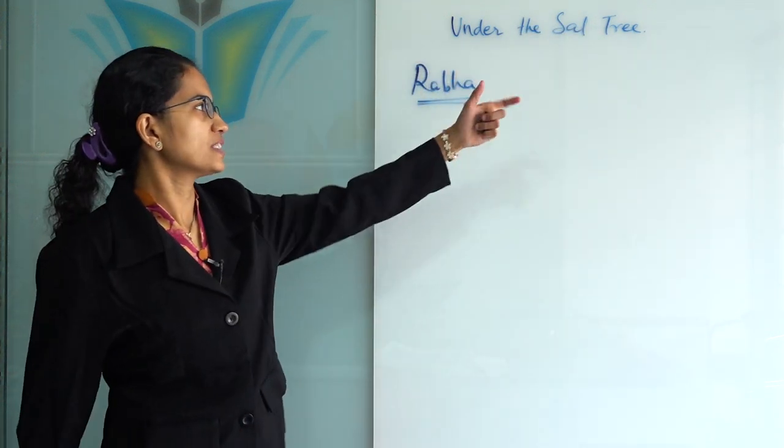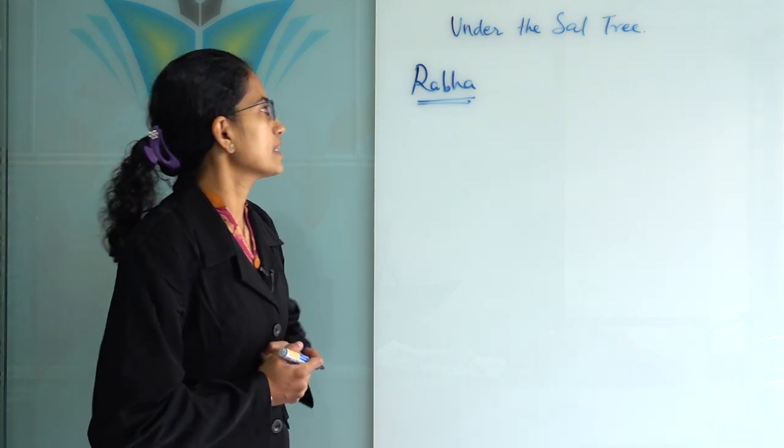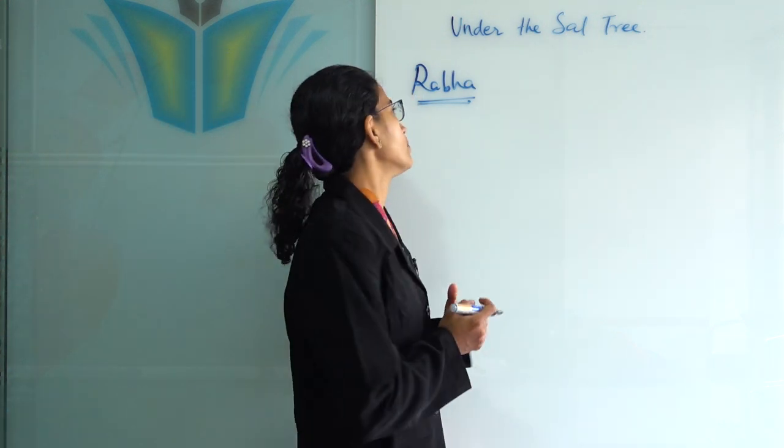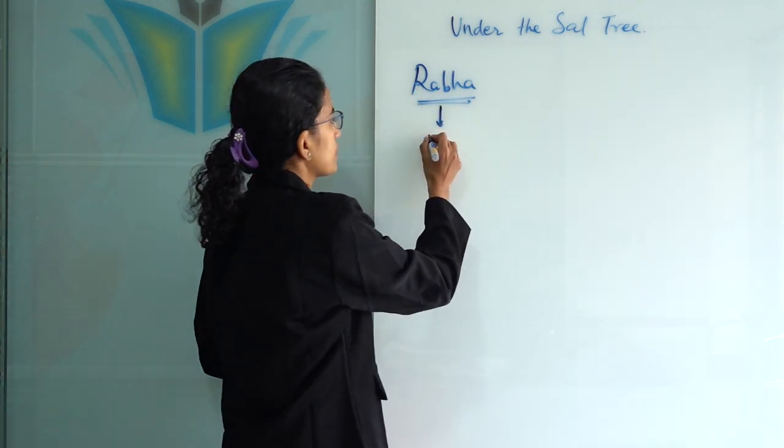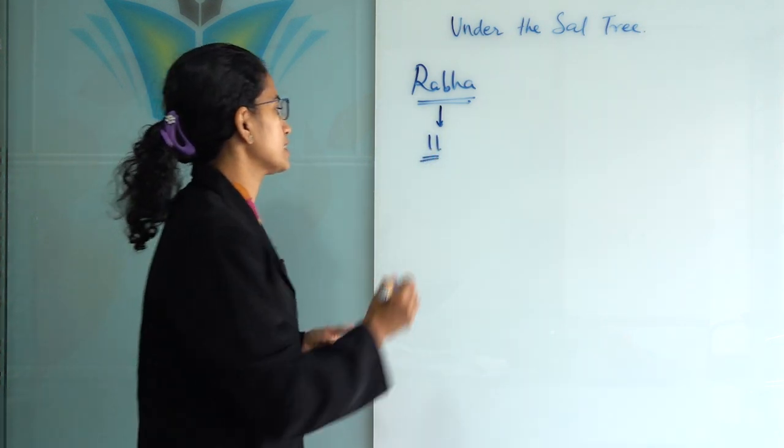The Under the Salt Tree Festival is conducted in the month of December, mainly by the Rabha community. The Rabha community has 11 different dialects, and some of these dialects are already dead.